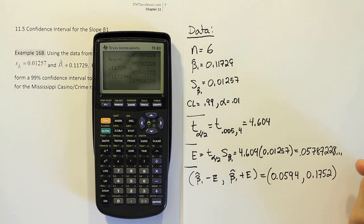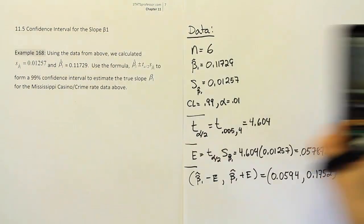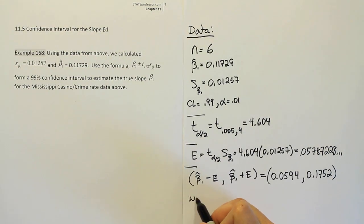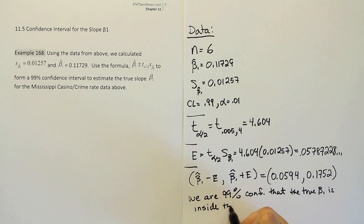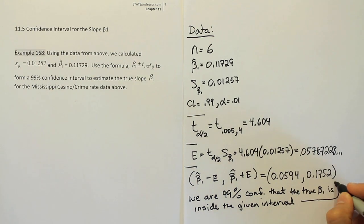Okay, so with that interval, we're going to give our standard interpretation, we're going to say we are 99% confident that, in this case, the true beta 1 value is inside the interval, inside the given interval, the given interval. And that given interval, of course, is right here.